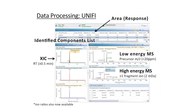At the very top is a components list, specifically with a filter applied to show what's called the identified components list. This is where data is filtered based on the retention time — with the window set to 0.5 minutes — and the precursor mass having to be within 20 parts per million of the theoretical accurate mass.